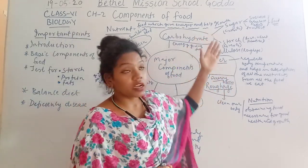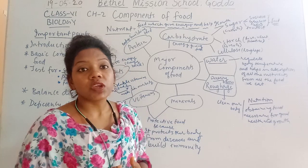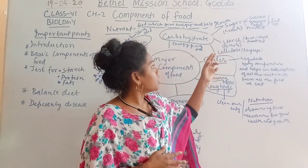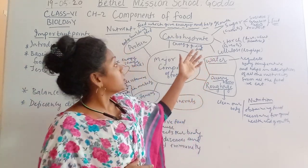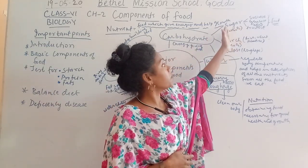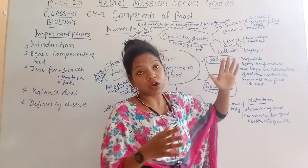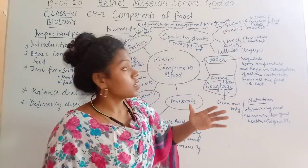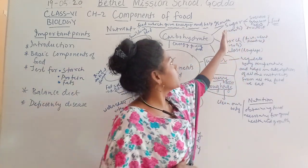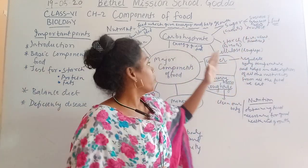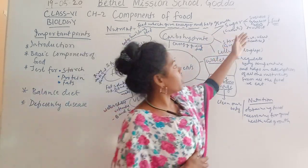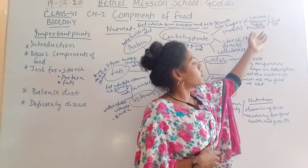Sugar is very sweet in taste. When we break down sugar into smaller, simpler components, we find sucrose, glucose, and fructose. That means when sugar breaks down into small pieces, it is again found as sucrose, glucose, and fructose.